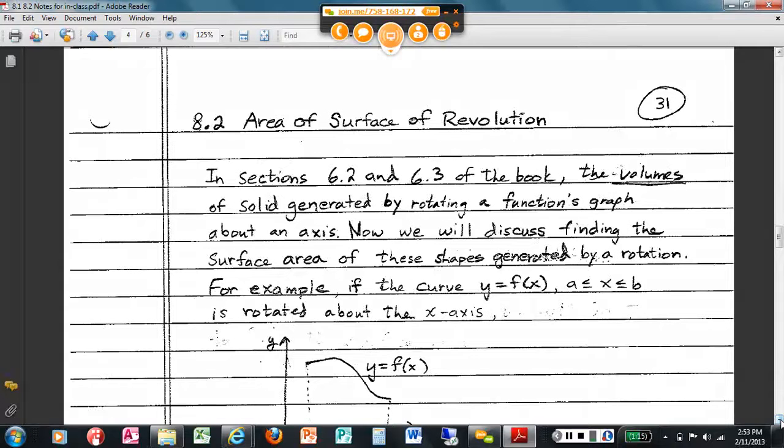For you too, on the handout, area of surface of revolution. In whatever sections it was, it's changed now, the volumes of the solid generated by rotating a functions graph about an axis. That's where we talked about disk method and washer method. We did that. We found volumes.